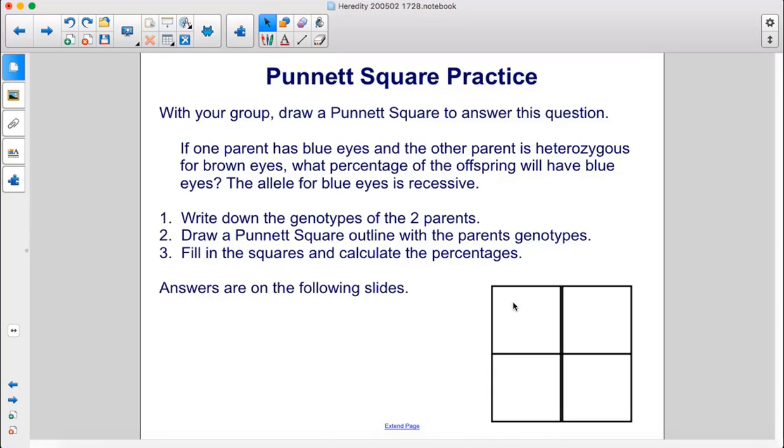Write down the genotypes of the two parents. Draw a Punnett Square outline with the parent's genotypes, fill in the squares and calculate the percentages. Answers are on the following slides.